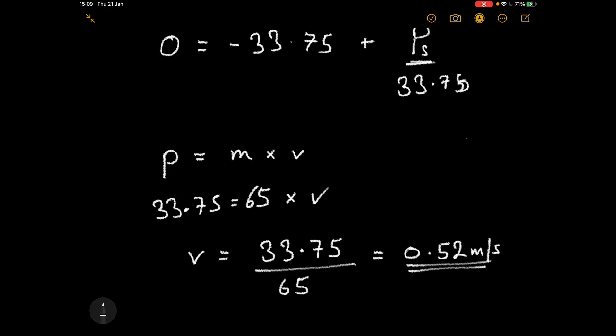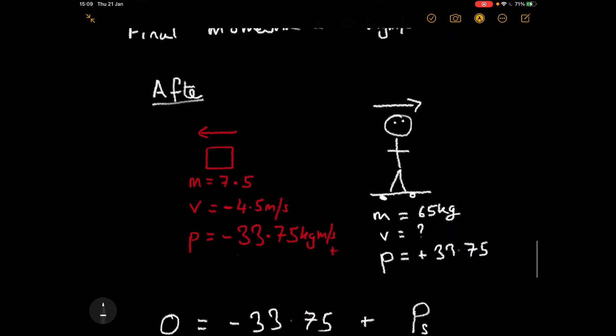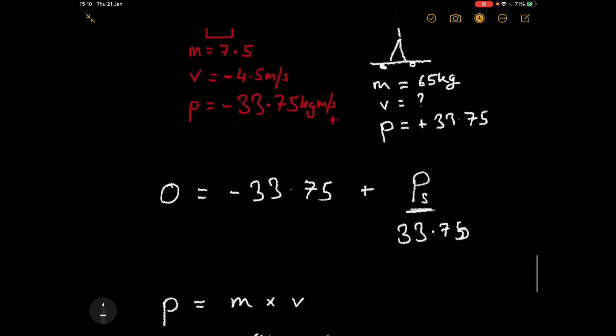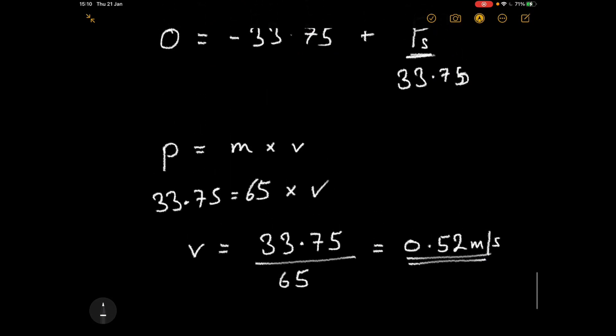Using p = mv: 33.75 = 65 times velocity, so velocity = 33.75 divided by 65 = 0.52 metres per second. That is the third kind of example: one part moves one way, so to conserve momentum the other part moves the other way. Both sides start and end at zero momentum, giving equal and opposite momenta.